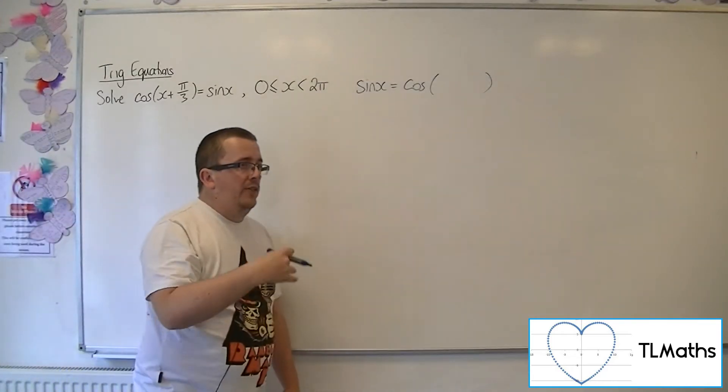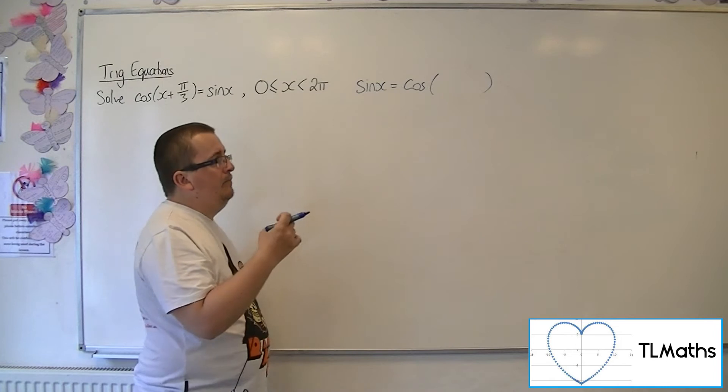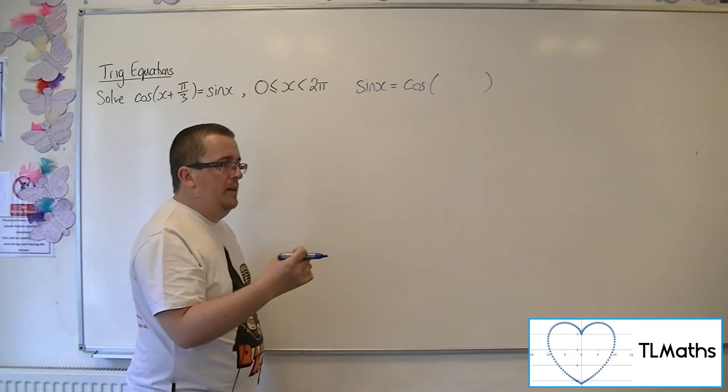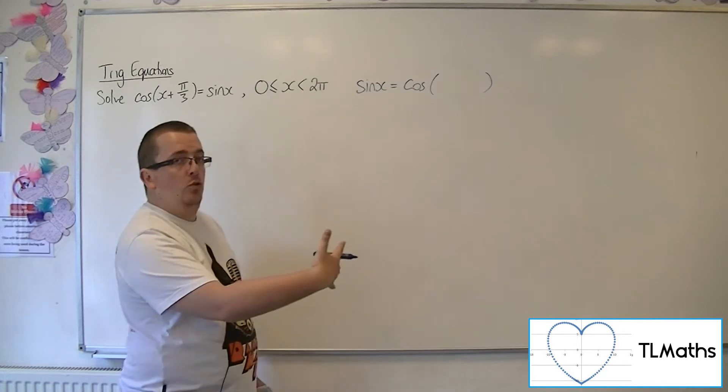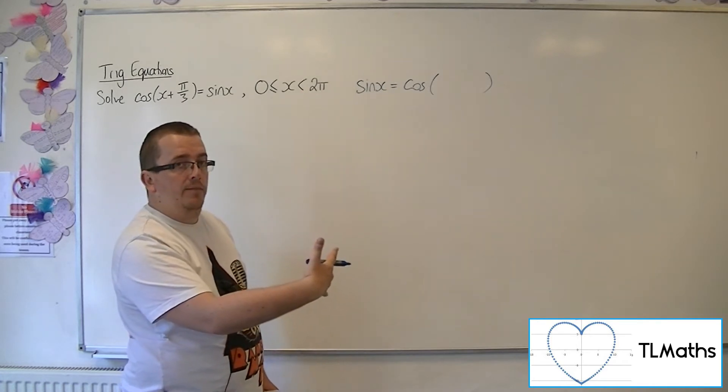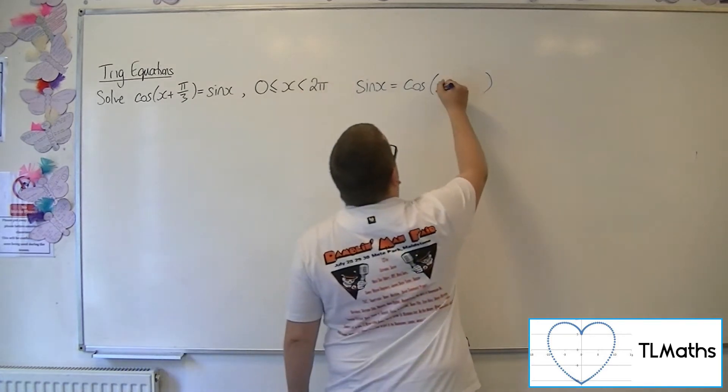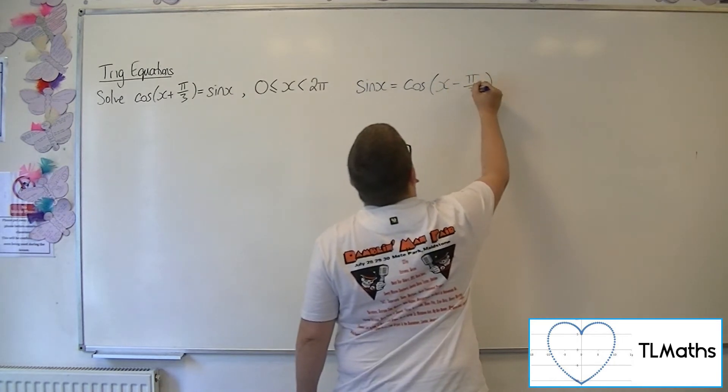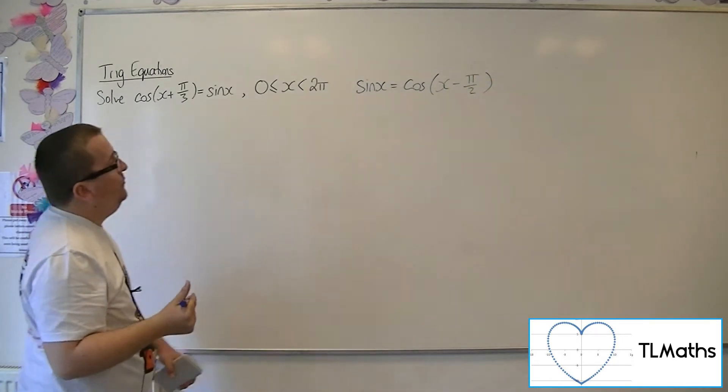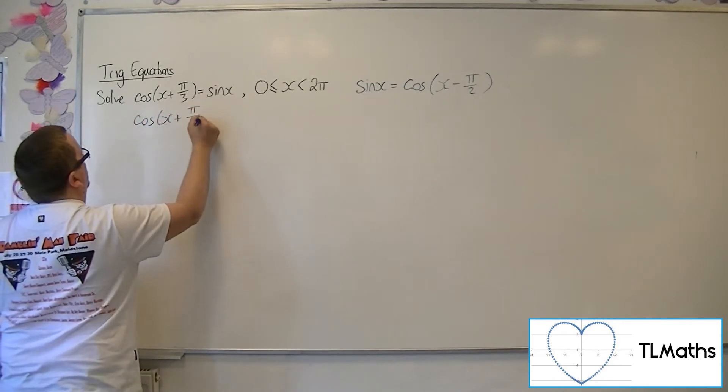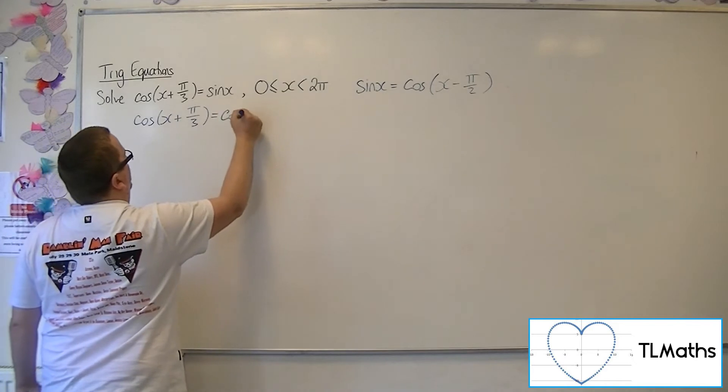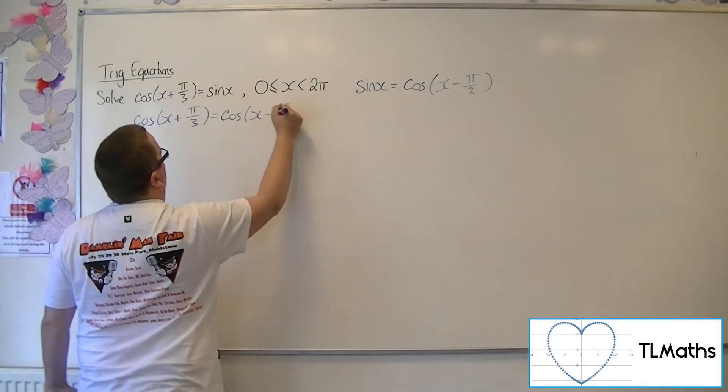Cosine x, thinking about that, in order to get to sin, must translate pi over 2 to the right. And so I would need x minus pi over 2. So I can replace sin x with cosine of x minus pi over 2.